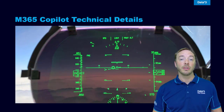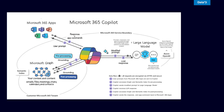At a technical level, this is how M365 Copilot works. M365 Copilot works by the user putting in a prompt from an M365 application such as Word, PowerPoint, Teams, Excel, Outlook, etc. This prompt goes to Copilot, which first runs it through a process called grounding. What it does is look through Microsoft Graph, which is essentially a collection of all the data that you have access to in your organization. It uses this information to build context for your request and looks for data that you might be referencing in your prompt.